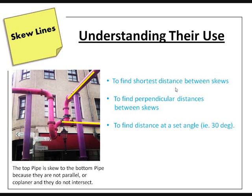Skew lines are used to find the shortest distance between skews, which would be the shortest distance we can manufacture a pipe between these two pipes. The blue line is shown.